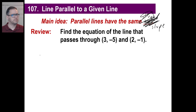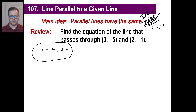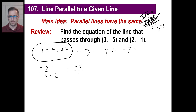I'm assuming you paused it. Anyway, we know how to start. The slope is the difference of the y's: negative 5 minus negative 1, which means plus 1. And then 3 minus 2. So negative 4 over 1 is just negative 4. So we have y equals negative 4x plus b. That's our basic one.